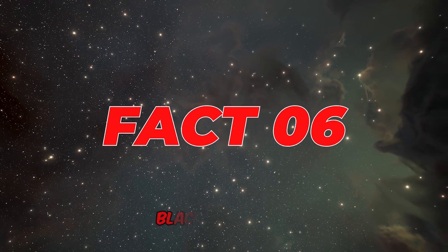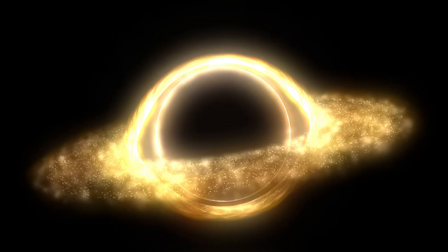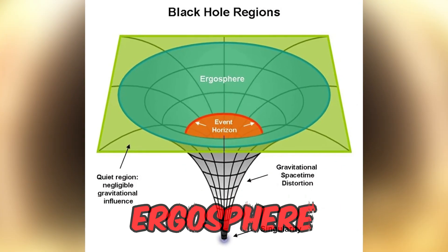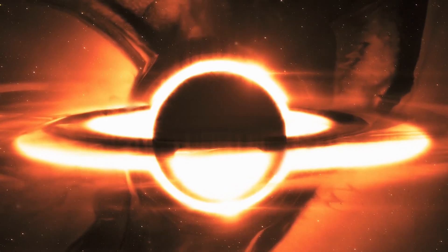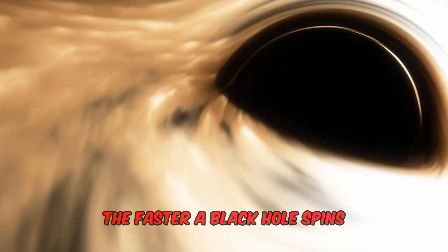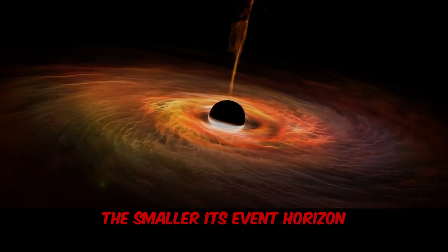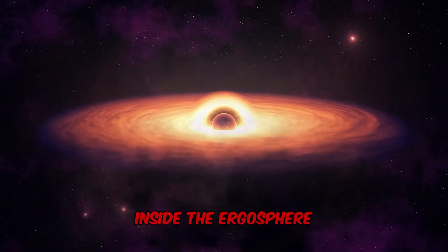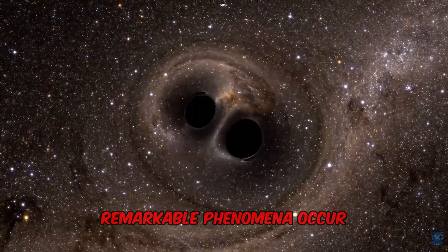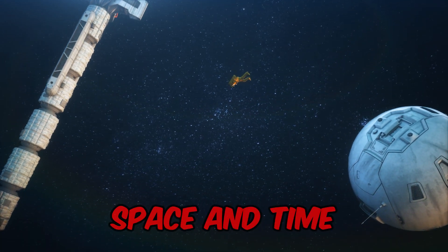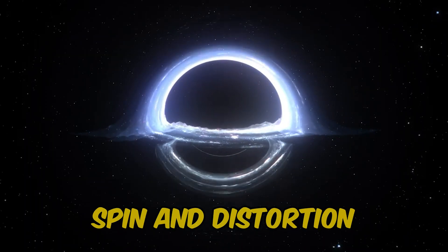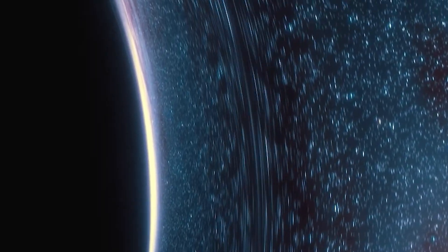Fact number 6. Black holes spin, and as they do, they create a region called the ergosphere. This region has some fascinating effects. The faster a black hole spins, the smaller its event horizon. Inside the ergosphere, remarkable phenomena occur, defying our conventional understanding of space and time. It's a cosmic dance of spin and distortion that pushes the boundaries of physics.